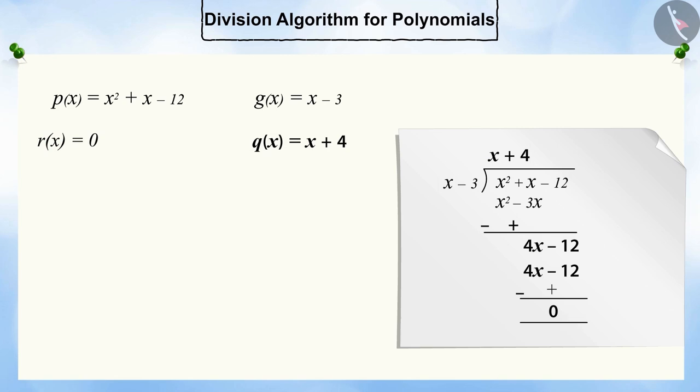In this way, we can divide one polynomial with another polynomial. But this is possible only when the degree of the dividend is greater than or equal to the degree of the divisor and the divisor is not 0.